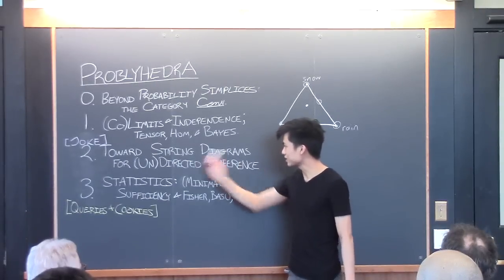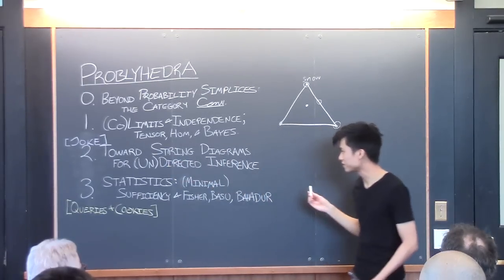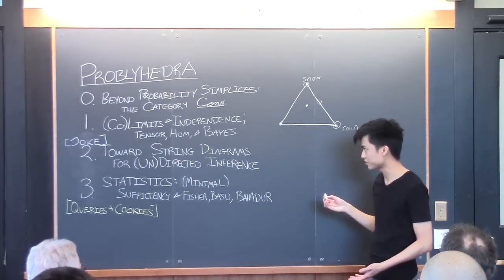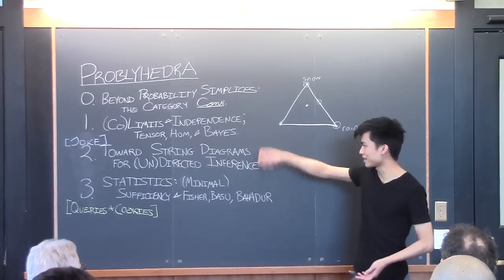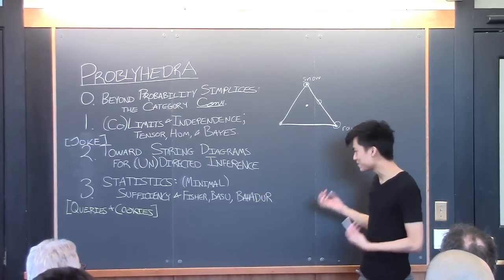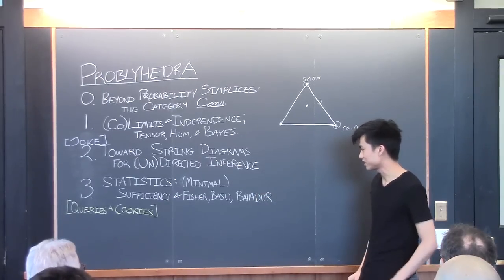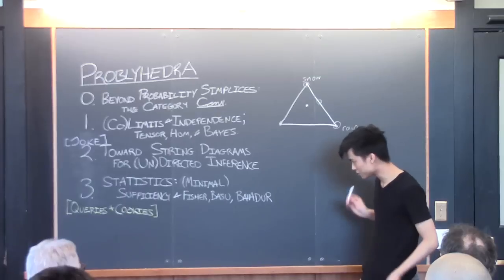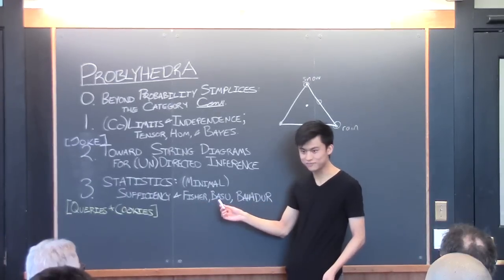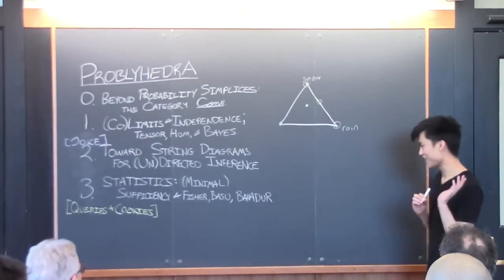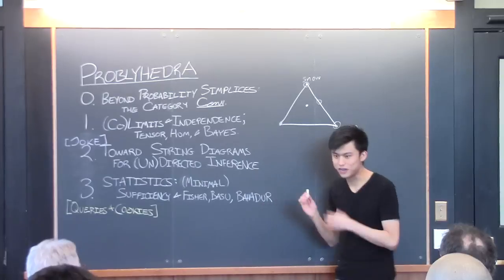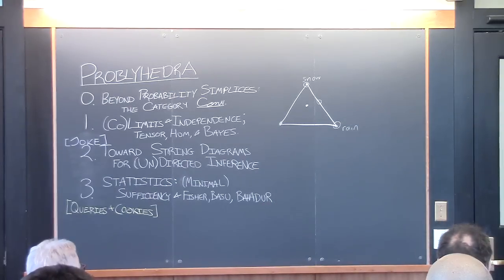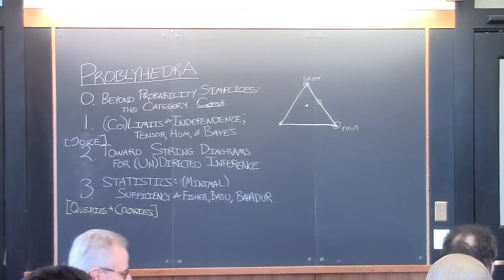Then I'll sketch how to think about Bayes' inference over various graphs using string diagrams. This is the sketchiest thing I'll show you. And then after that we'll actually prove some things which from this perspective are trivial — we'll prove the Fisher-Neyman factorization theorem, Basu's theorem, and Bahadur's theorem. These are basic theorems about sufficient statistics.